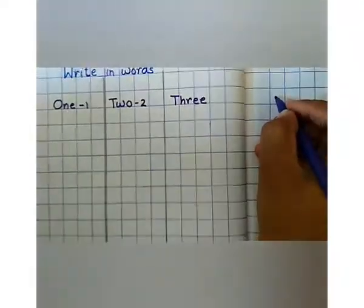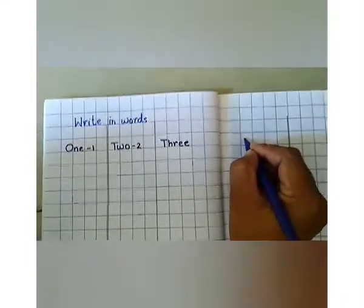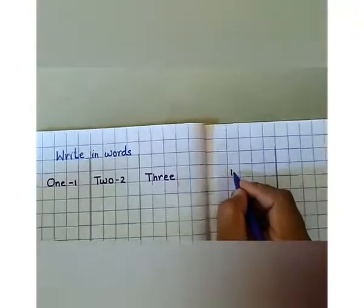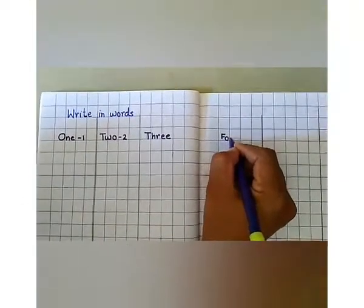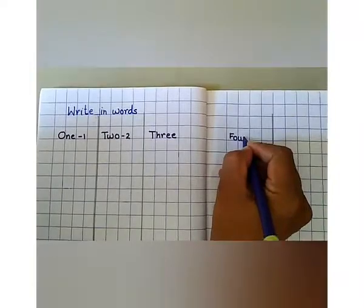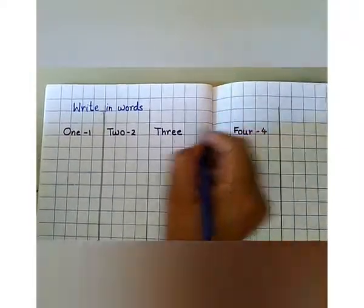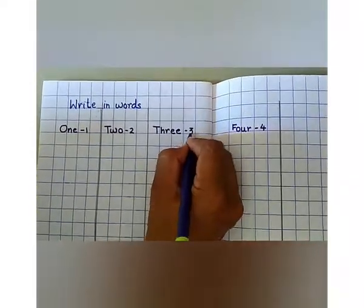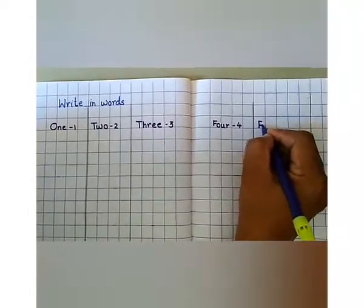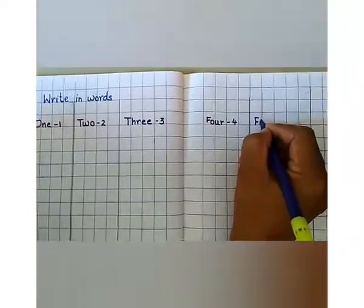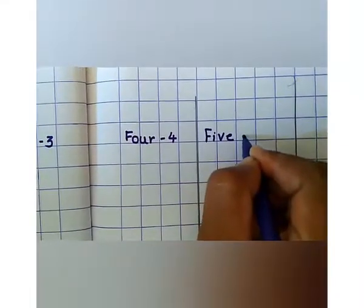Next page. F, O, U, R — four. F, I, V, E — five.